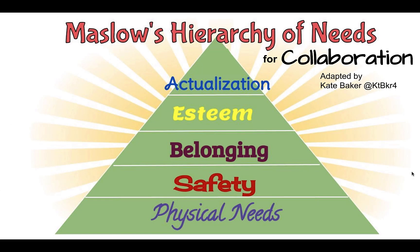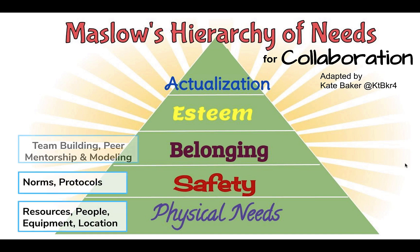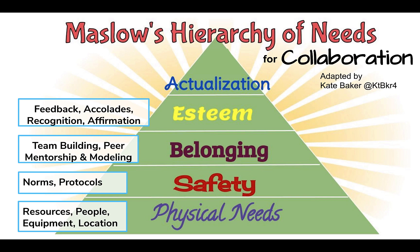In terms of the group space, we also have to think about collaboration needs. If we don't have actual people to collaborate with, we're not going to be able to collaborate. We need the safety needs of protocols and norms so we can collaborate efficiently and effectively. Focusing on belonging and esteem, we need team building, peer mentorship, modeling, feedback, accolades, recognition, and affirmation — so we feel good about the group space we're learning in and are motivated to continue.